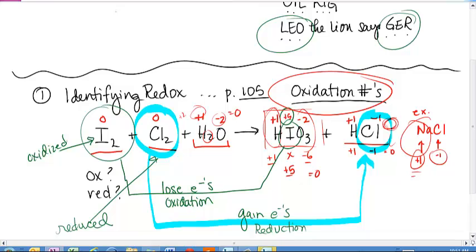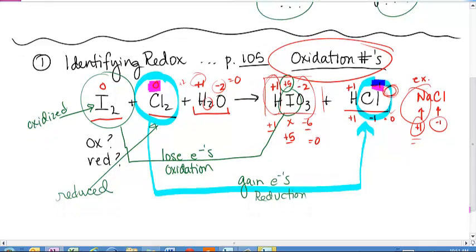Notice what's being reduced in a reduction. The thing that's actually being reduced, even though it's gaining electrons, is the oxidation number. It goes from zero, and it is reduced down to minus one. So that's another way to recognize a reduction. The oxidation number goes down.